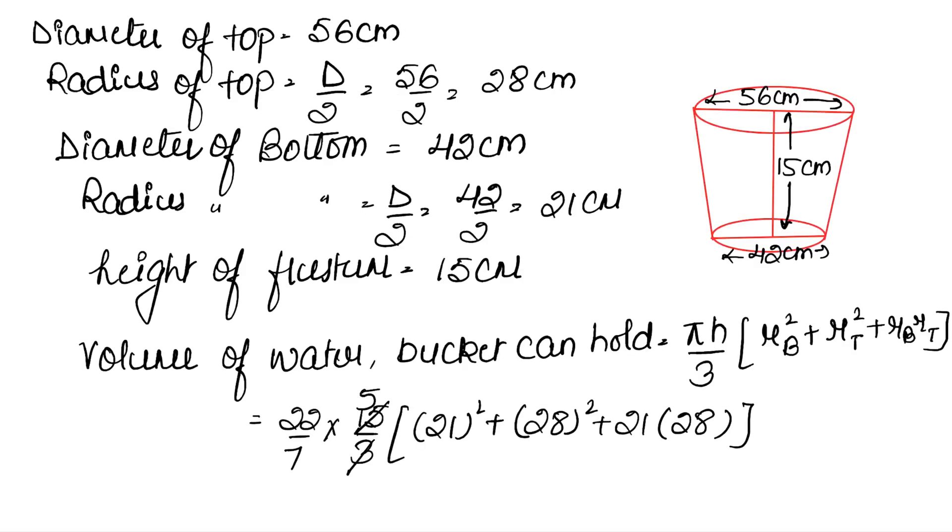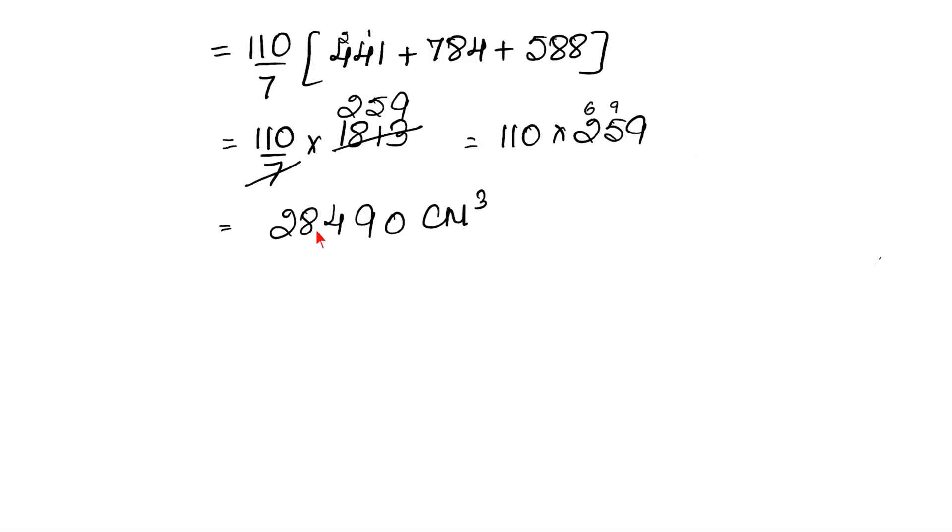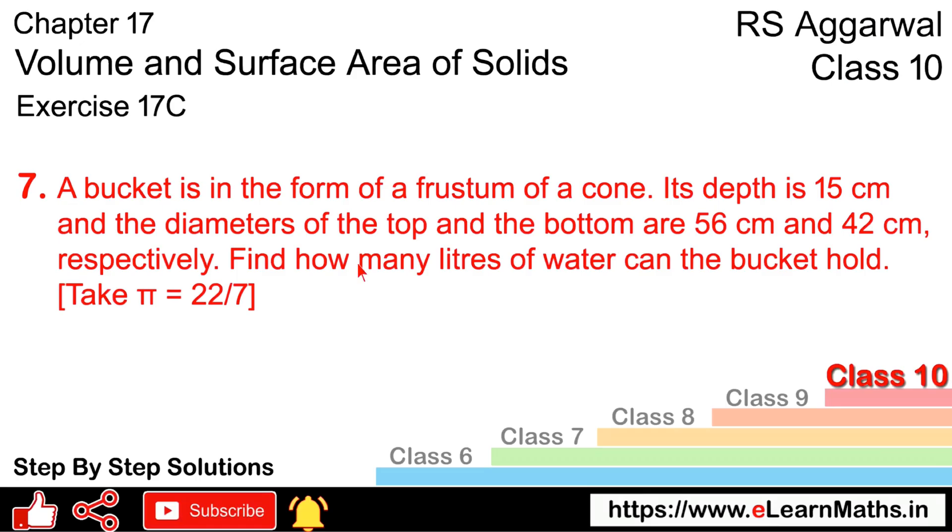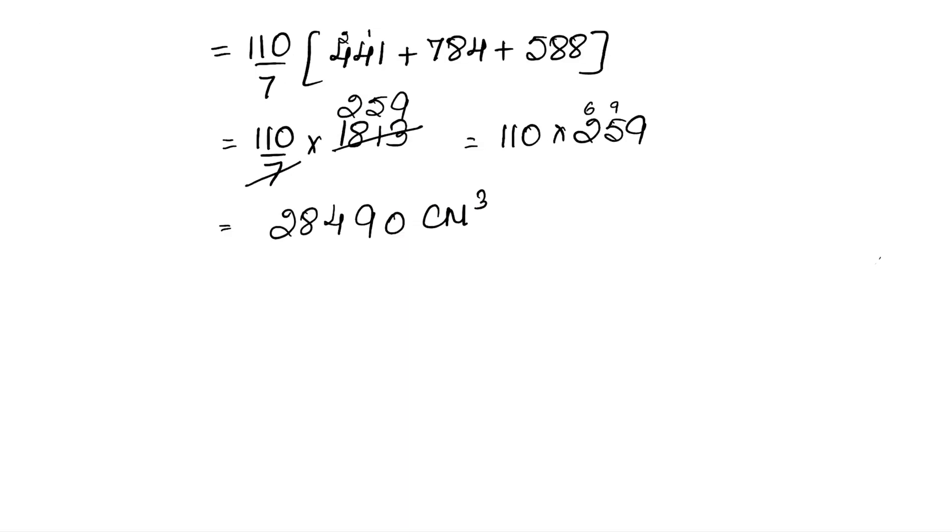Because our unit was in centimeter, we have volume in centimeter cube. But we need to express this in liters. We know 1 cubic centimeter equals 1/1000 liters. So 28,490 cubic centimeters equals 28,490 times 1/1000 liters.